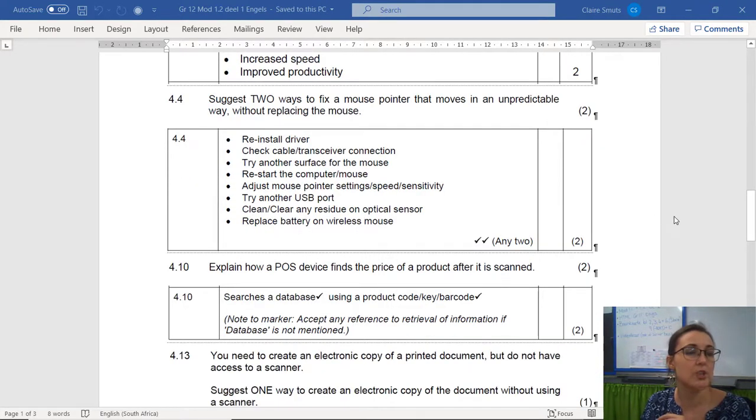4.4. Suggest two ways to fix a mouse pointer that moves in an unpredictable way without replacing the mouse. Number one, reinstall the driver. Not install the driver. Because if you had said install the driver, then the mouse pointer would not have moved in an unpredictable way. It would not have moved at all. So that would not have been correct.